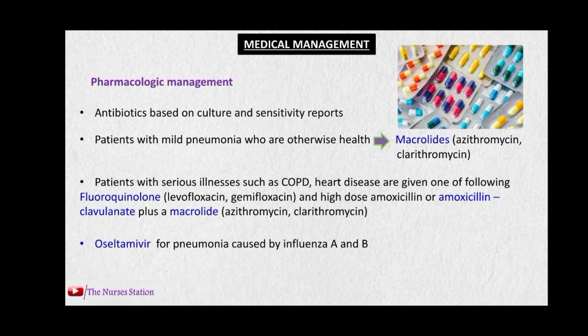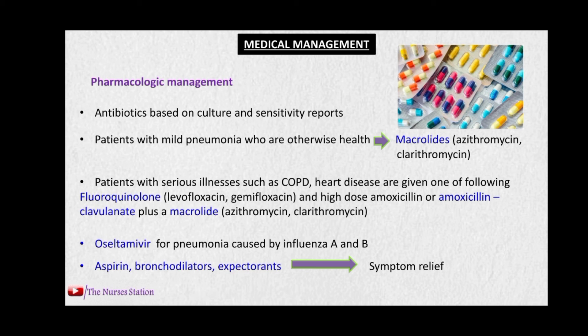Since pneumonia can also be caused by viruses, for viral causes like influenza A or B, oseltamivir is used for symptom relief. Aspirin, bronchodilators, and expectorants are also used. Bronchodilators help dilate inflamed bronchioles to ease breathing, and expectorants help remove secretions from the lungs.